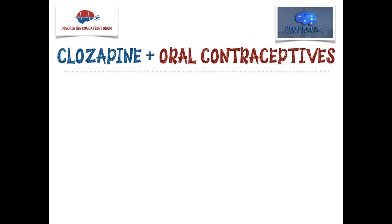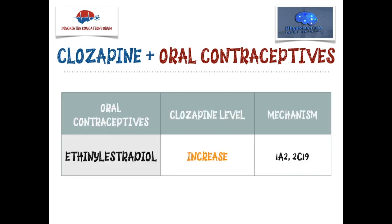Moving on to oral contraceptives and clozapine interactions — I found two case reports for ethanol estradiol-containing oral contraceptives. They increase the clozapine level by inhibiting 1A2 and 2C19. So be cautious with this type of oral contraceptive. I also found one case each for antihypertensive medications like lisinopril, amiodarone, and modafinil, but the data was limited so I have not included them.